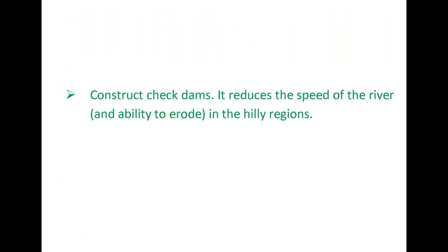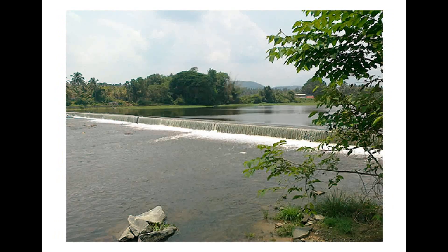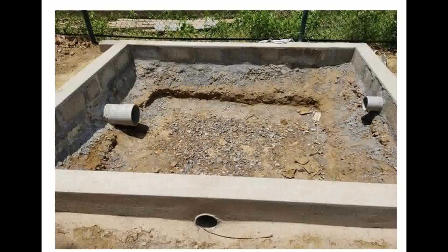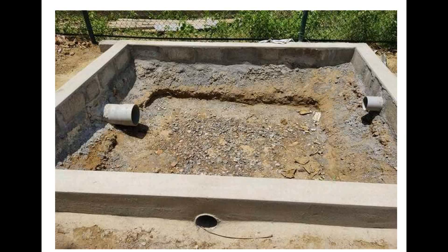Construct check dams — it reduces the speed of the river and its ability to erode in the hilly regions. Dig soak away pits or percolation pits; they reduce the runoff of water.